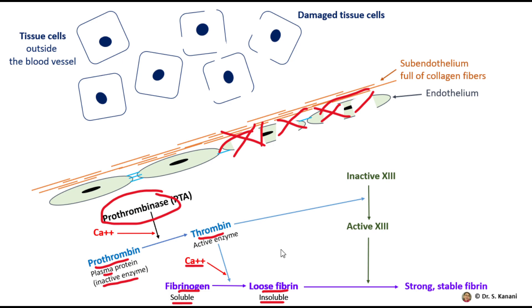However, when fibrin molecules first form, they are not strong and not very stable. Thrombin can help with this by activating clotting factor 13. Active factor 13 is called fibrin stabilizing factor — that is the one that makes these loose and weak fibrin molecules strong and stable.